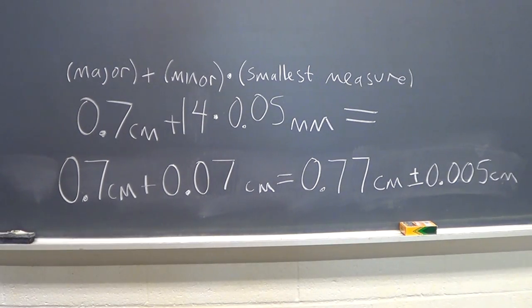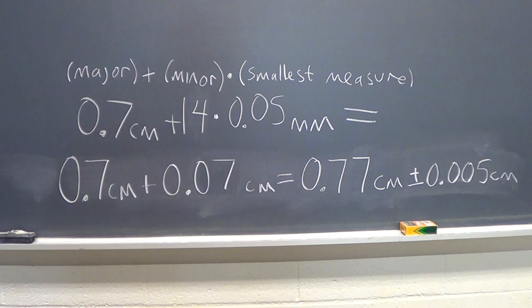The way we'll combine these sets of measurements—the 0.05 millimeters on the minor scale as the smallest measurement, with the major scale of 0.7 centimeters—is we'll take the major plus the number of minor increments, in this case 14, and then multiply that number times the smallest measure. So what we get back after we convert to the correct units of centimeters, in this case, is 0.77 centimeters, with an accuracy of plus or minus 0.005 centimeters.